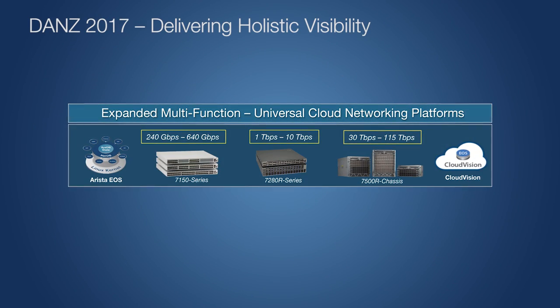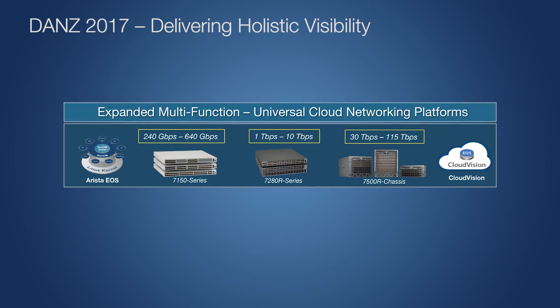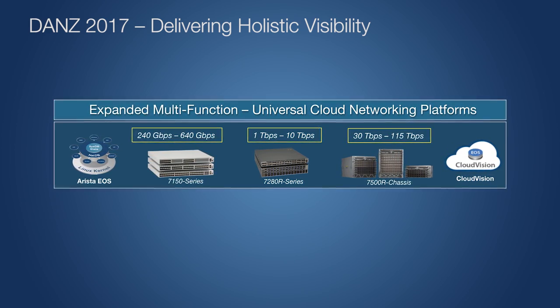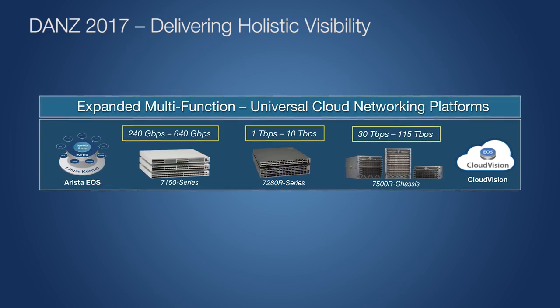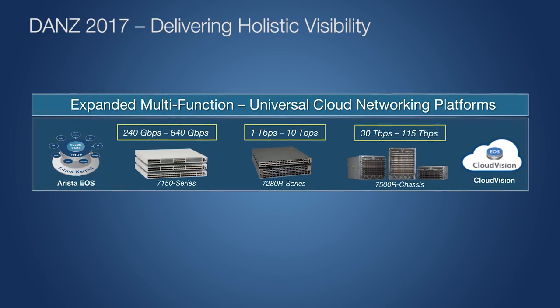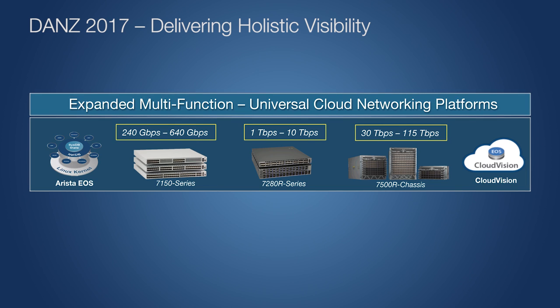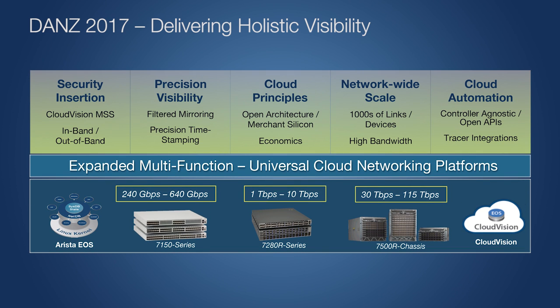Arista's popular 7150S and R-Series platforms now support DANZ functionality at densities and scales that allow a small number of visibility nodes to meet the needs of a large cloud data center without all the expense and complexity. Arista's platforms deliver state-of-the-art capabilities for visibility into real-time network telemetry and traffic with unmatched precision and scale, and these universal and widely deployed platforms are interchangeable as production network infrastructure or out-of-band visibility infrastructure.